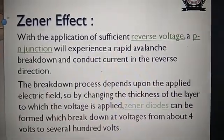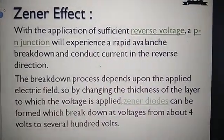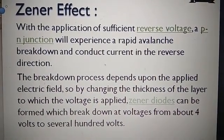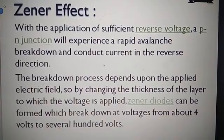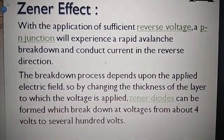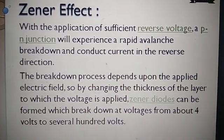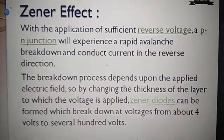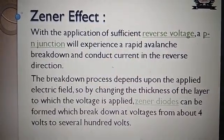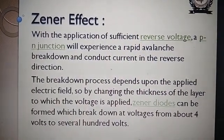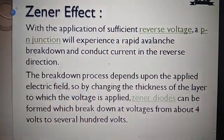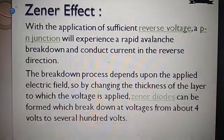What is the Zener effect? With the application of sufficient reverse voltage, a PN junction will experience a rapid avalanche breakdown and conduct current in the reverse direction. You must remember: with the application of sufficient reverse voltage, a PN junction will experience a rapid avalanche breakdown and conduct current in the reverse direction.